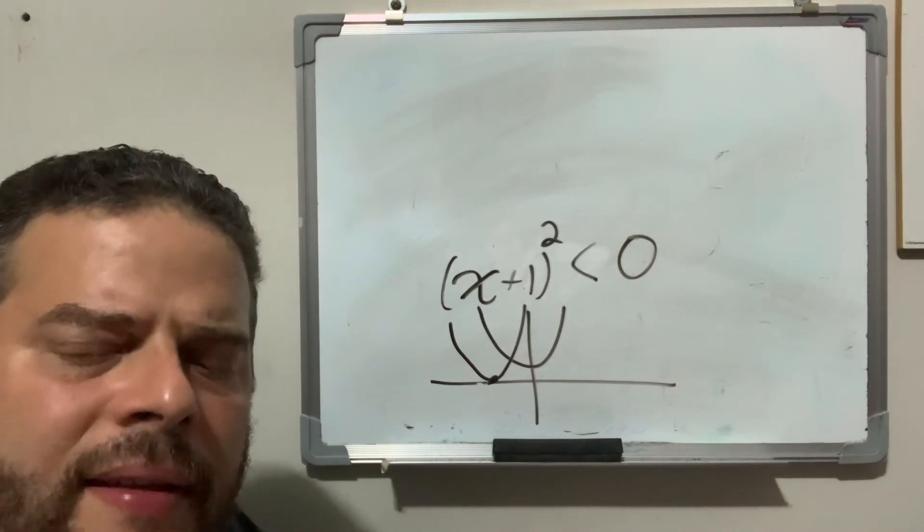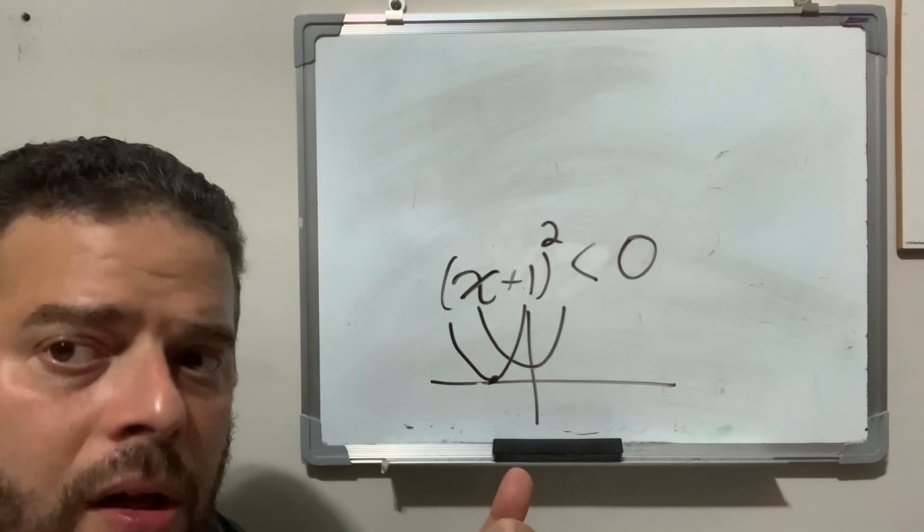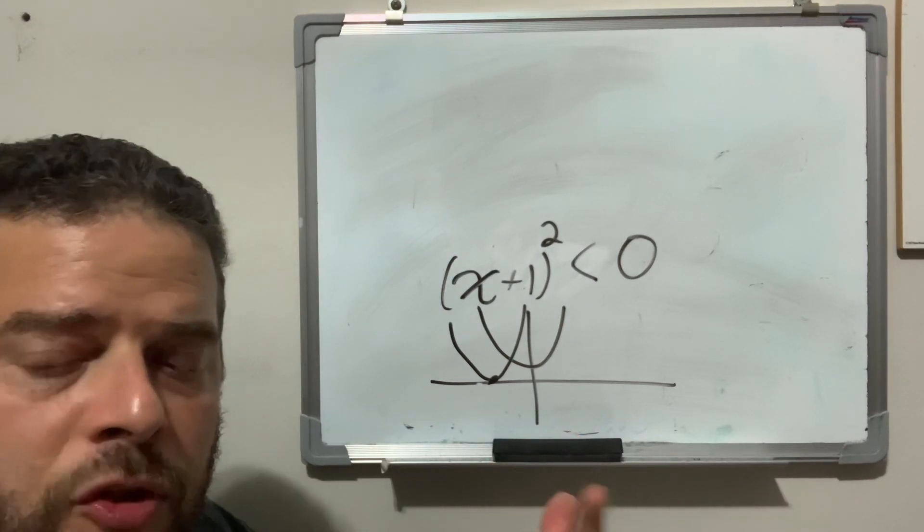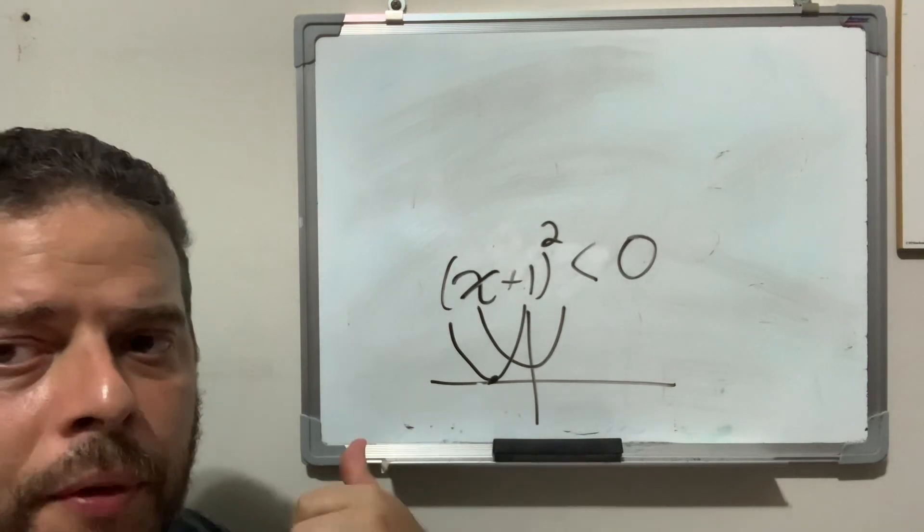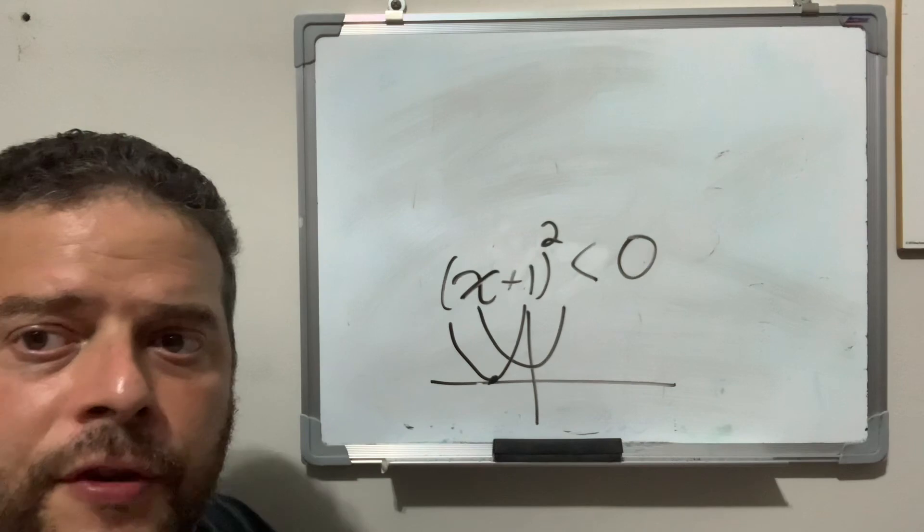So, the two big examples you really have to focus on are example one, solving polynomial inequalities, and example three, the special type of solutions: all real numbers, no solutions, or a single solution. That's it for today. Have a great day.